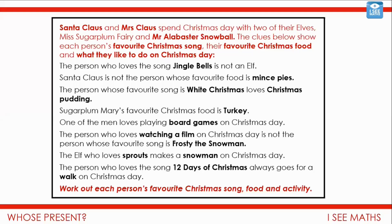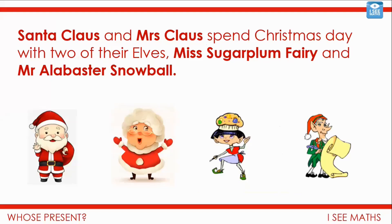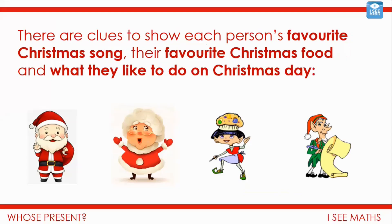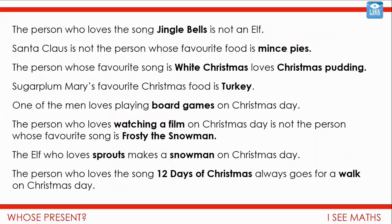Or we can work through this one as a worked example together. Here it is: Santa Claus and Mrs Claus spend Christmas Day with two of their elves, Miss Sugarplum Fairy and Mr Alabaster Snowball. There are clues to show each person's favourite Christmas song, their favourite Christmas food, and what they like to do on Christmas Day. Here are those clues: the person who loves the song Jingle Bells is not an elf. Santa Claus is not the person whose favourite food is mince pies. The person whose favourite song is White Christmas loves Christmas pudding. Sugarplum Mary's favourite Christmas food is turkey. One of the men loves playing board games on Christmas Day. The person who loves watching a film on Christmas Day is not the person whose favourite song is Frosty the Snowman.